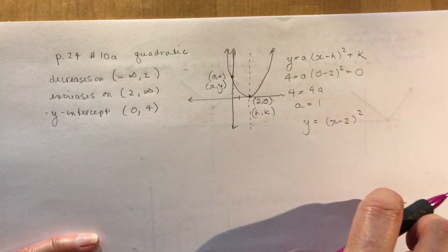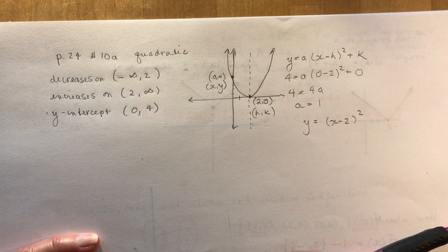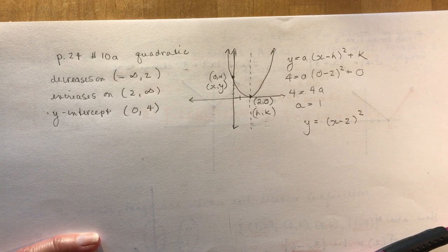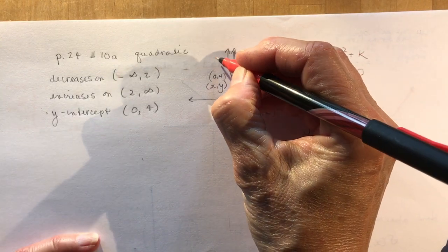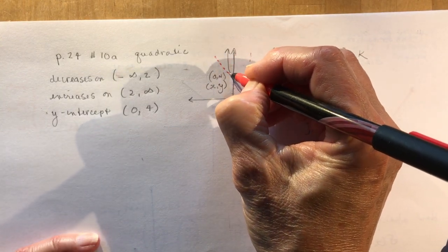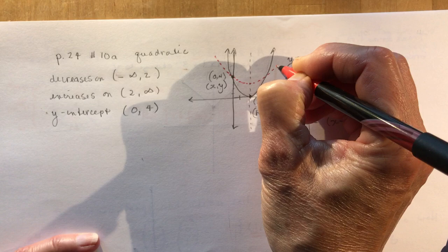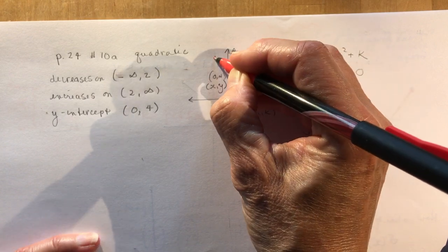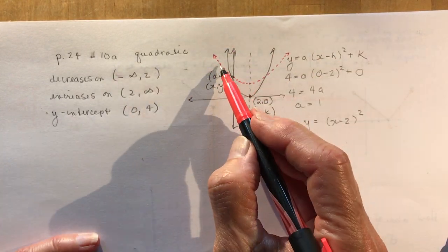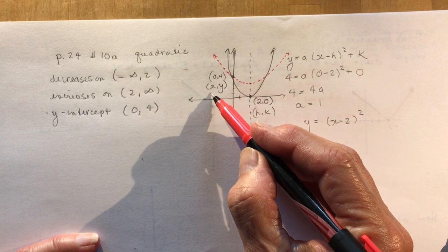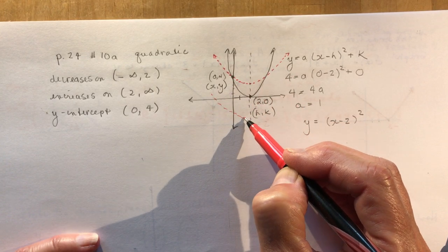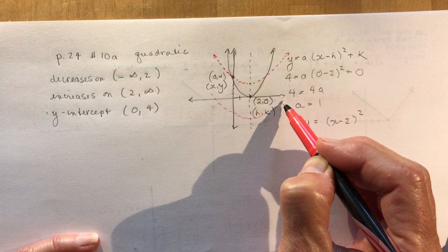Now the question also says, is this the only equation for the function? And you should be able to see from looking at this that no, I could draw other parabolas. I could have one that goes like this. It still is following all of the characteristics. It's decreasing to here, and then it's increasing. Or I could have another one that goes down here somewhere. So there's many different possibilities.